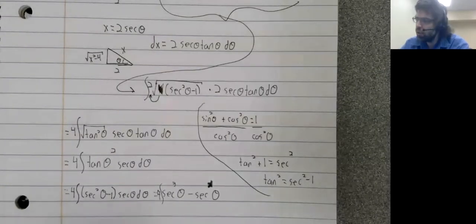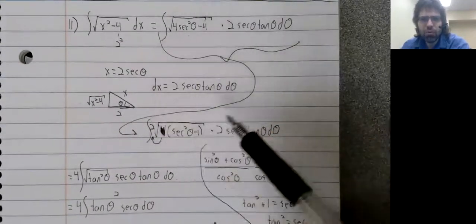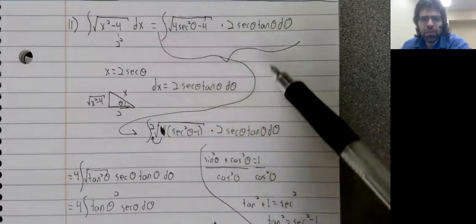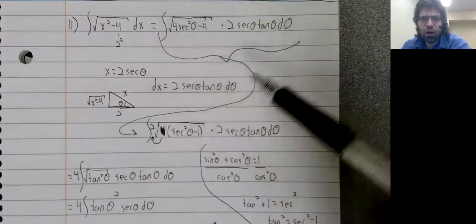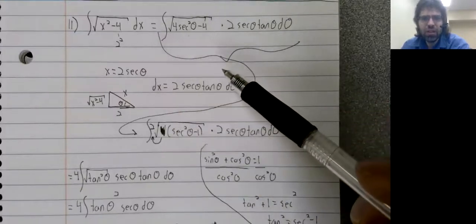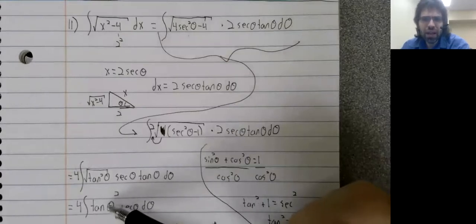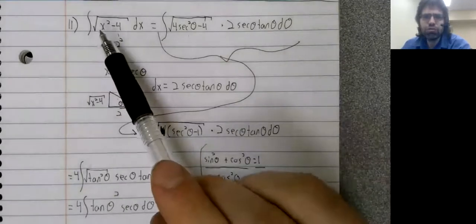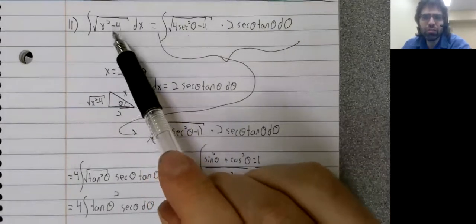I mean, I am but human. I suppose it's possible that I made some mistake early on in the process and that's why I got such an ugly integral. But I don't think I did. I think the integral was itself the problem.